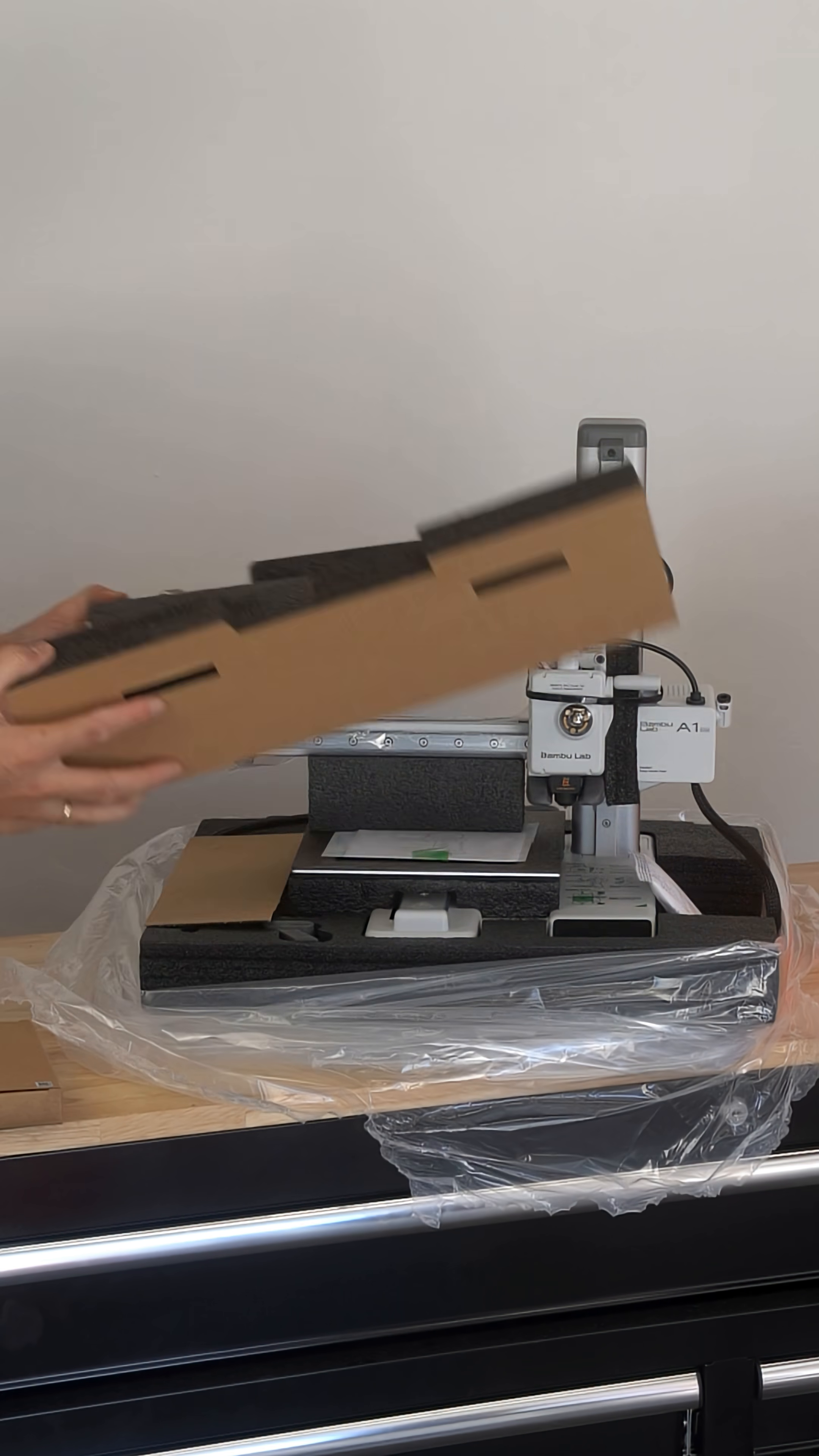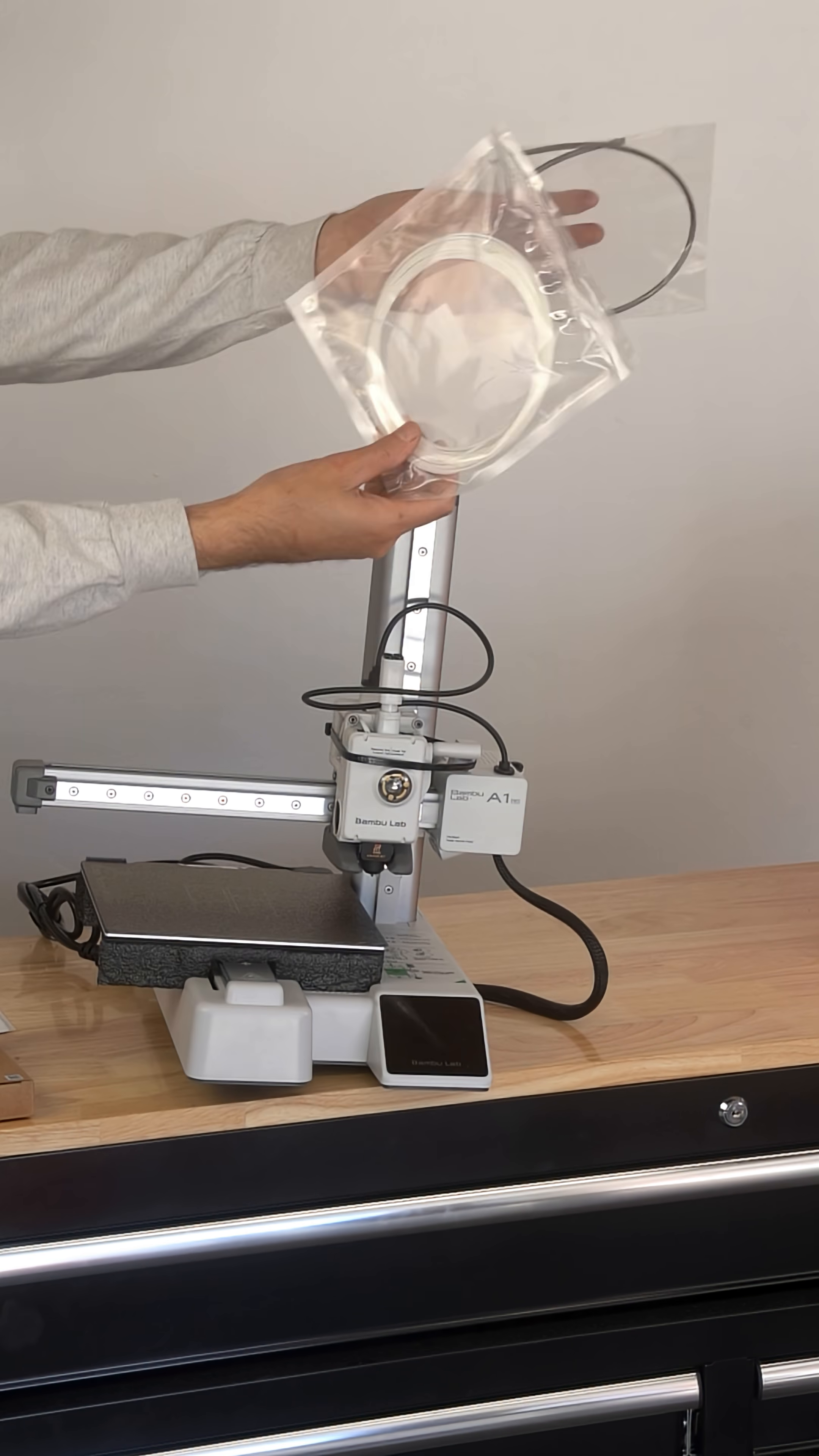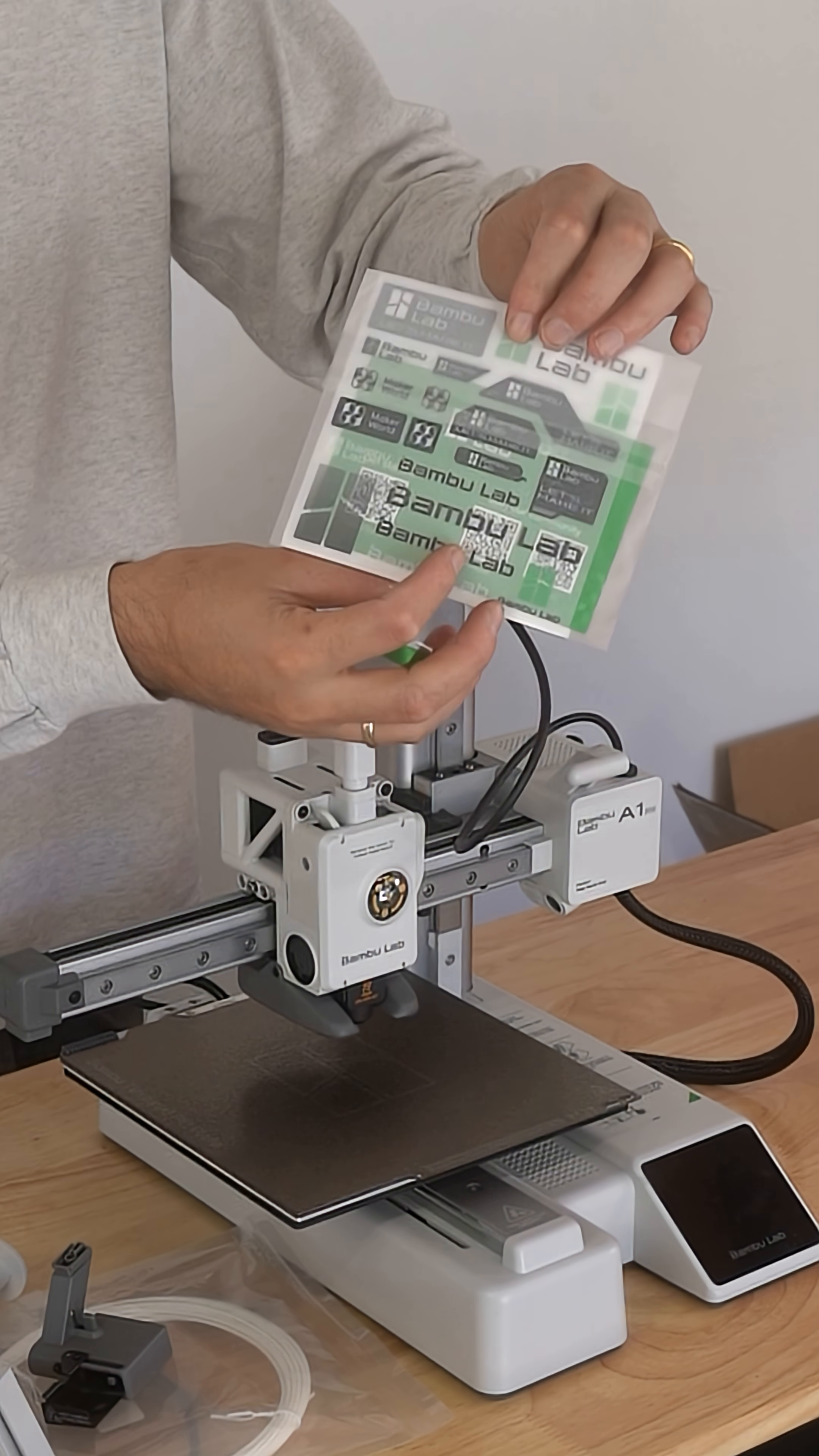In this short form video series, I'll show you exactly how to unbox and set up your first 3D printer. After removing the packaging, carefully cut this zip tie. You'll also want to remove any extra padding that's under the build plate.